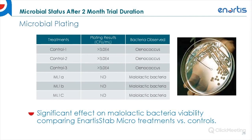After the two months, we took our final sampling and submitted the samples for microbial plating. The control modality had viable populations of Enococcus oeni greater than 3×10⁴, while the Anardis Stab Micro treatment showed no detectable colonies. This really shows a significant effect on malolactic bacteria viability, comparing Anardis Stab Micro treatments versus the controls.